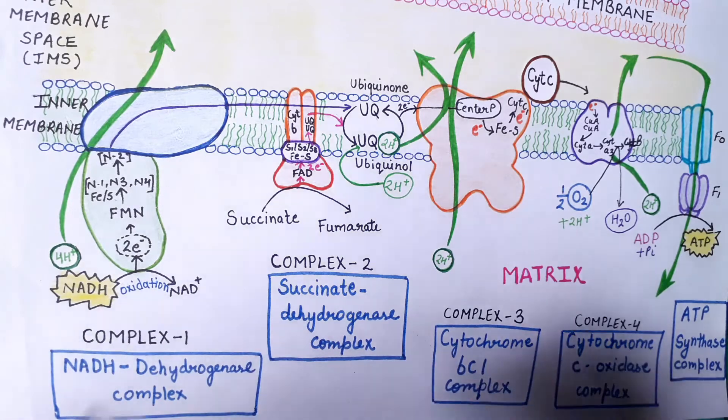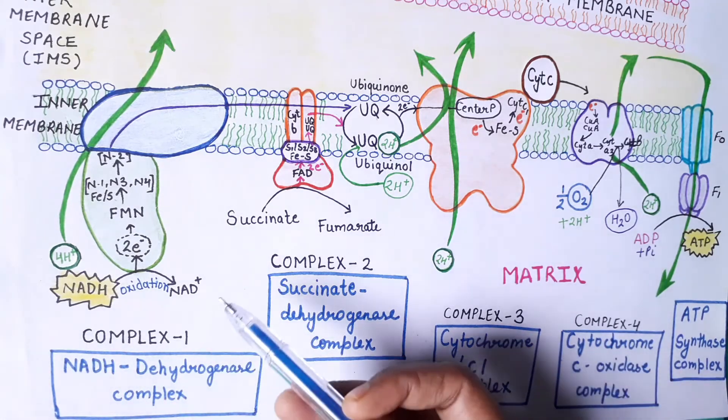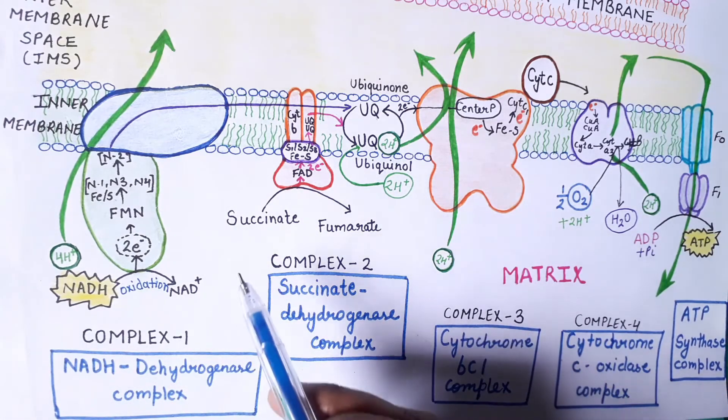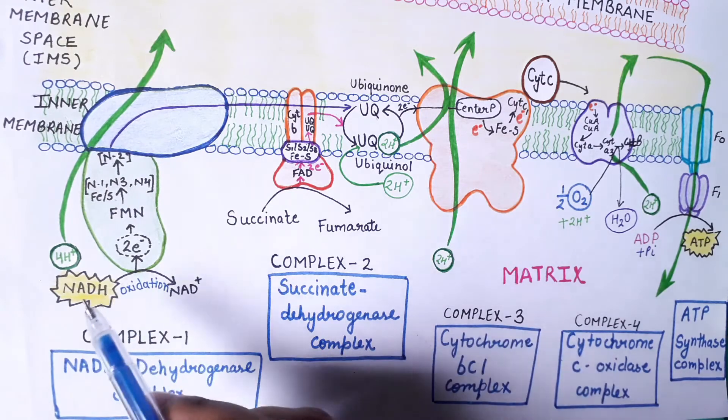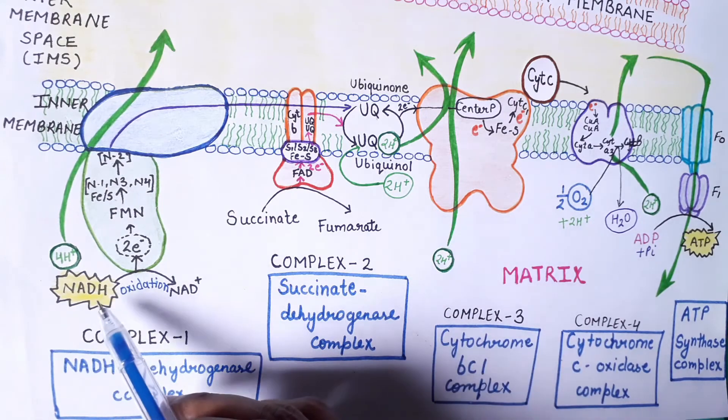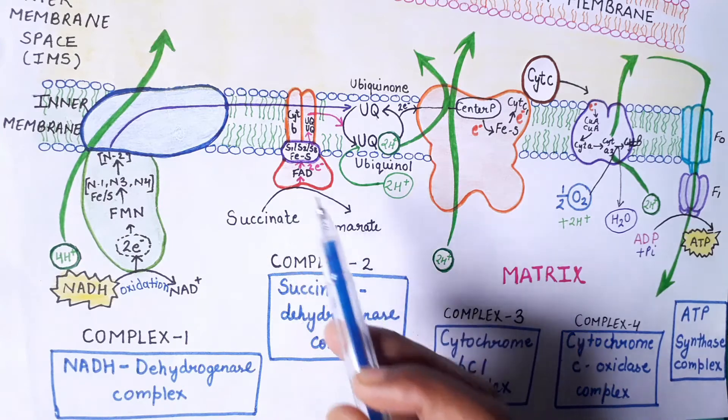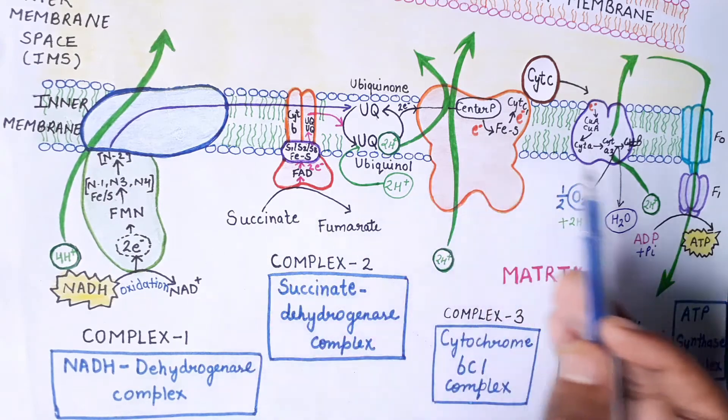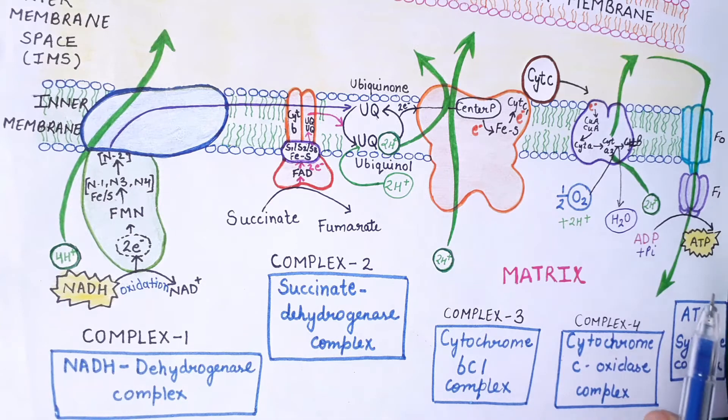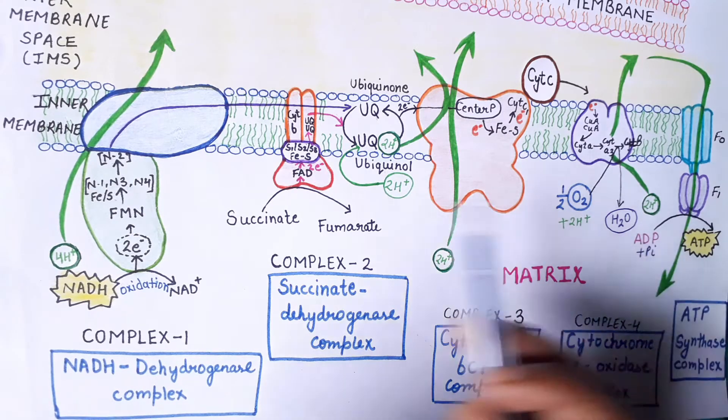In oxidative phosphorylation, firstly there is oxidation of the substrates, that is your NADH and FADH2, and later on there is formation of your ATP. So the formation of ATP is coupled with the oxidation of the substrate.